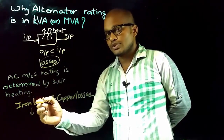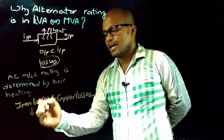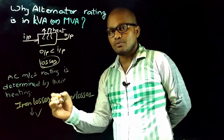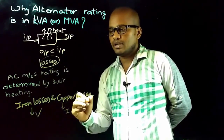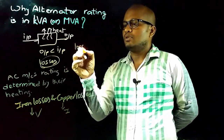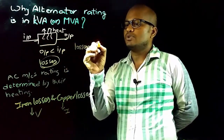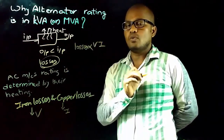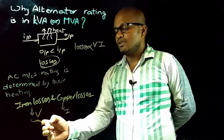The major losses present in an AC machine are iron losses and copper losses. From the losses topic, it is known that iron losses depend on voltage and copper losses depend on current. So losses are directly proportional to the product of voltage and current.